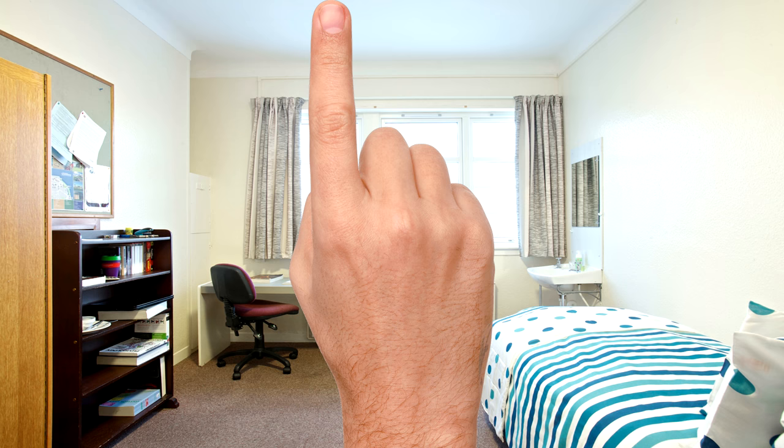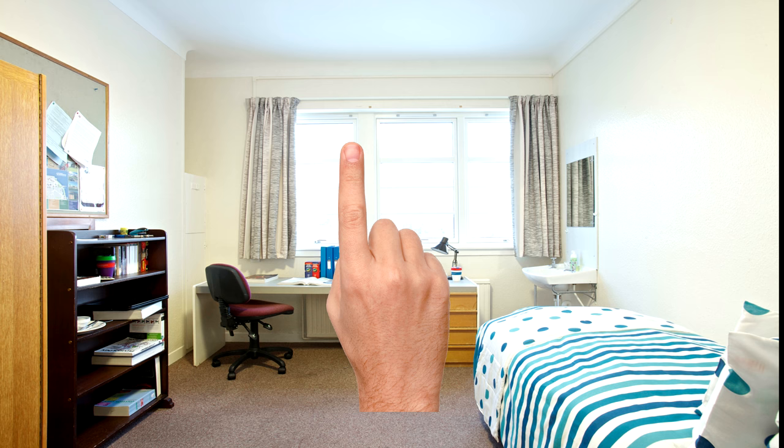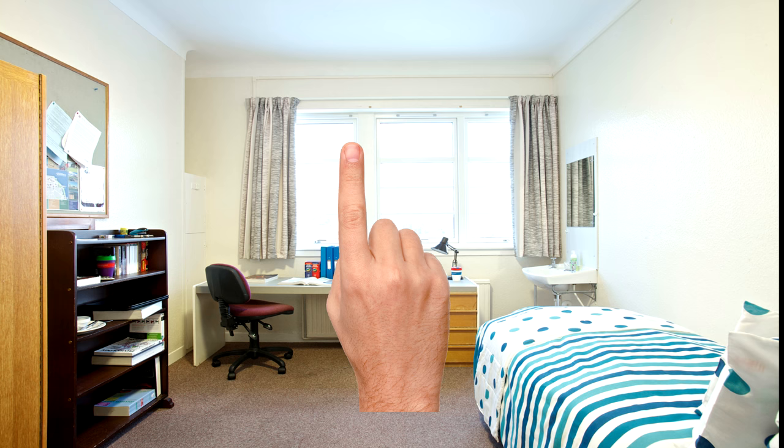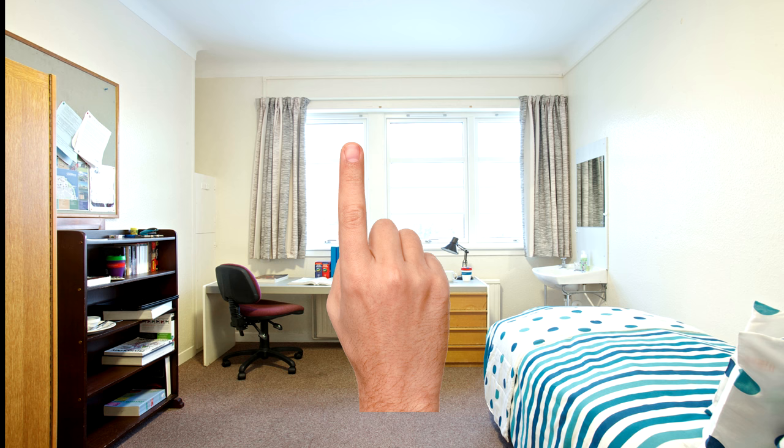This common event is easily reproduced. Hold your finger out at arm's length and look at your fingertip first with one eye closed, then the other. The motion of your fingertip as seen against the background objects is caused by the change in your viewing position, about 7 centimeters from one eye to the other.